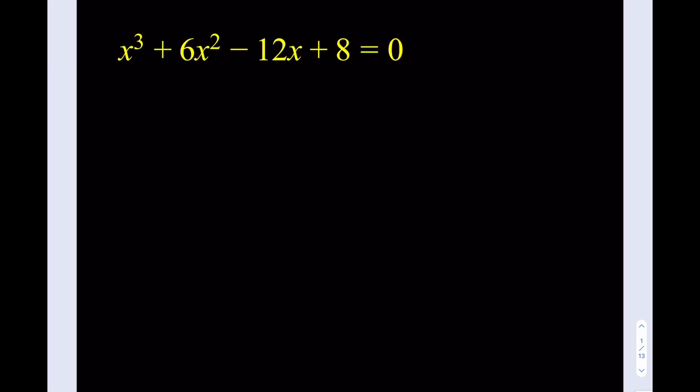Now, first notice that we have x cubed plus 8. What is so special about those numbers? They're perfect cubes. Let's put them together. So I'll take the x cubed and I'll take the 8 and put them together like x cubed plus 8. And then the rest will be 6x squared minus 12x, and this is going to equal 0.